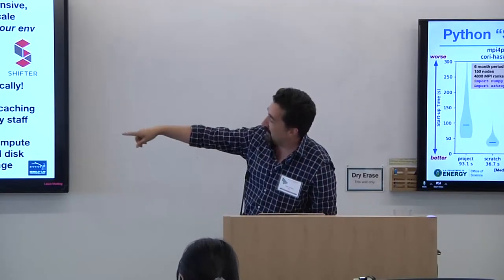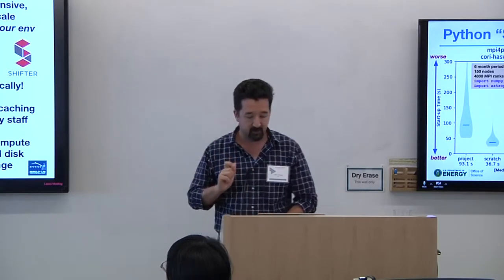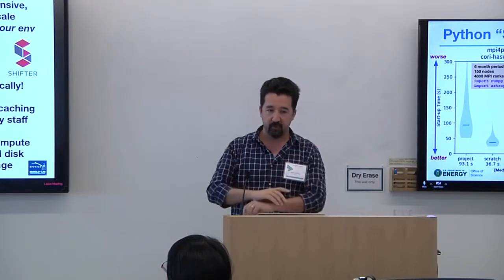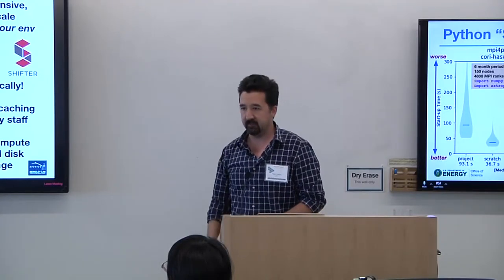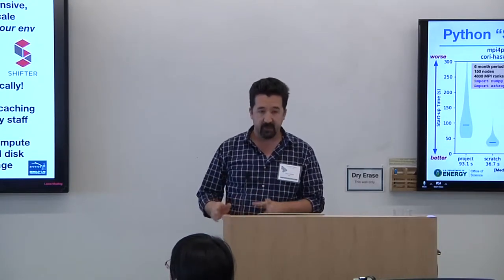Here's an example: doing 'import numpy' and then importing AstroPy — which has lots of little submodules — and how long it takes at 4,800 rank scale on different file systems. The best performance is with Shifter, which is a container technology. The second best is to use the global common file system. Don't do a big MPI NumPy import from your home directory — it's so bad I don't even benchmark it. Scratch is okay; project is not great; global common is your second best option.